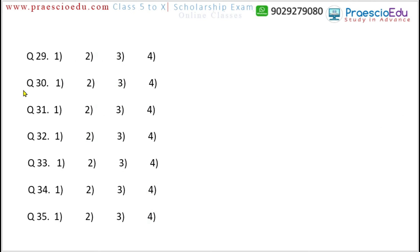Question 29: the options use roman numerals — X means 10, L means 50, and D means 500. But option 4 contains a P, which is not a roman numeral. So option 4 is the different one for question 29.